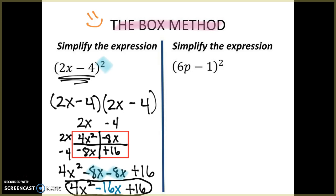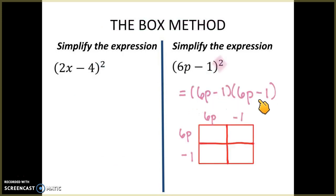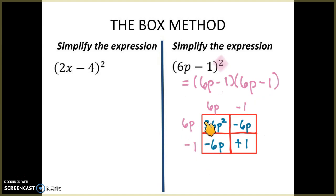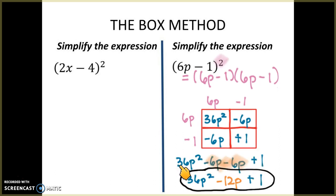I have a problem for you to try, just like the one we just did. First, write 6p minus 1 twice because that's what the power of 2 tells you. Draw your box, write 6p minus 1 on top and on the side. Multiply: 6p times 6p is 36p squared, 6p times negative 1 is negative 6p, negative 1 times 6p is negative 6p, and negative 1 times negative 1 is positive 1. Combining like terms gives negative 12p in the middle, so the final answer is 36p squared minus 12p plus 1.